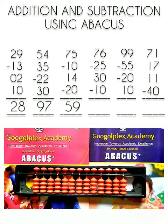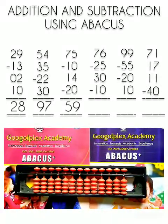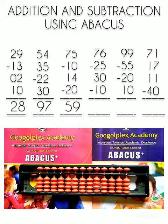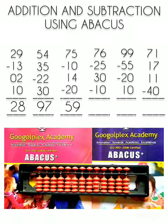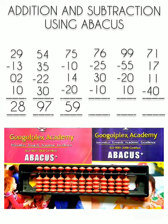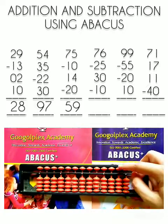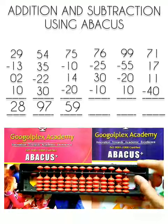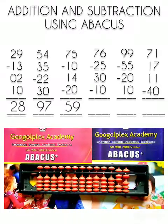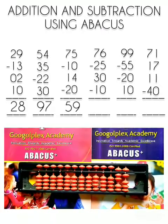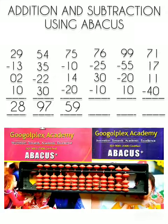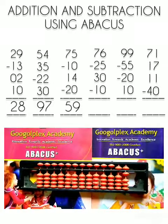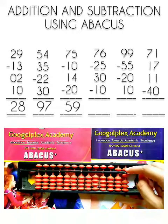Now question number 4. We have to solve 76 minus 25 plus 30 minus 10. First number is 76. This is 70, 50 plus 20, 70 and this is 6, 5 plus 1, 6. Now we have to subtract 25 from it. Minus 10, minus 20, this is minus 5.